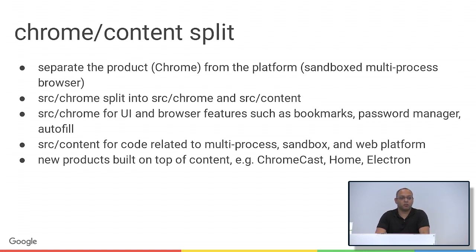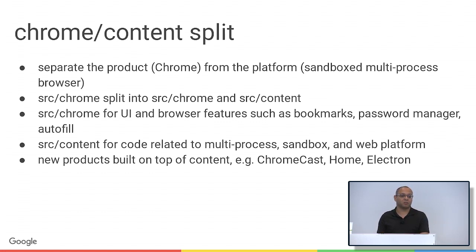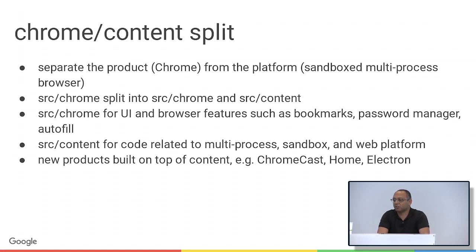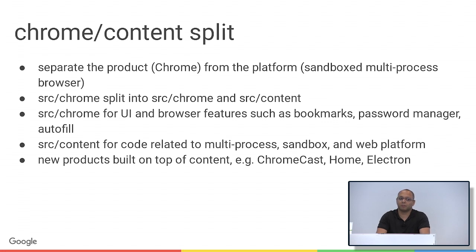Another large multi-year re-architecture was the Chrome content split. Originally we started this to improve code layering and testability. We split the browser product — Chrome — from the platform, which we defined as the code to run the sandbox multiprocess web platform engine. We kept the product code in source/chrome and created a new directory called source/content for the low-level code. Higher-level code like bookmarks, extensions, password manager, and autofill stayed in source/chrome. As a result, external and internal products were built on top of content: Android WebView, Chromecast, Google Home, and externally, Electron.